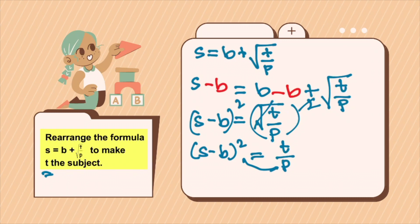So we need to move this p to the other side or multiply p on both sides. So you'll have p bracket s minus b square equals t. Therefore, t is equal to p times s minus b square.